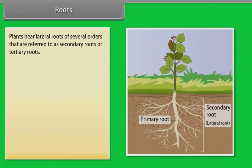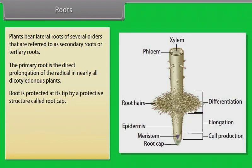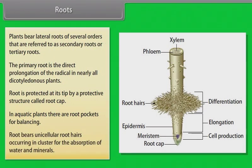Plants bear lateral roots of several orders, referred to as secondary roots or tertiary roots. The primary root is the direct prolongation of the radicle in nearly all dicotyledonous plants. Root is protected at its tip by a protective structure called root cap. In aquatic plants, there are root pockets for balancing. Root bears unicellular root hairs occurring in clusters for the absorption of water and minerals.